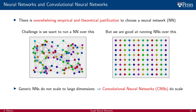Do we know how to overcome this issue? Well, in the case of images and signals in time, we know that convolutional neural networks succeed at scaling. That's what I meant when I said that we are good at running neural networks on images — we can make them scale.